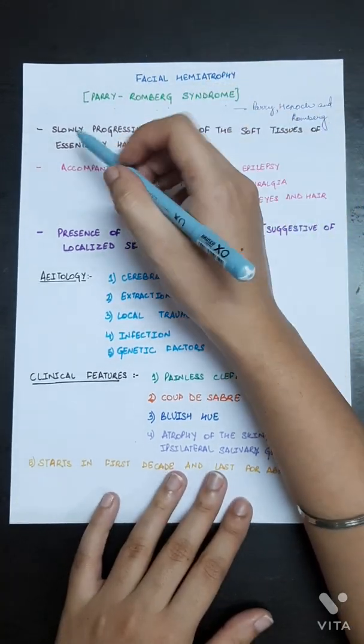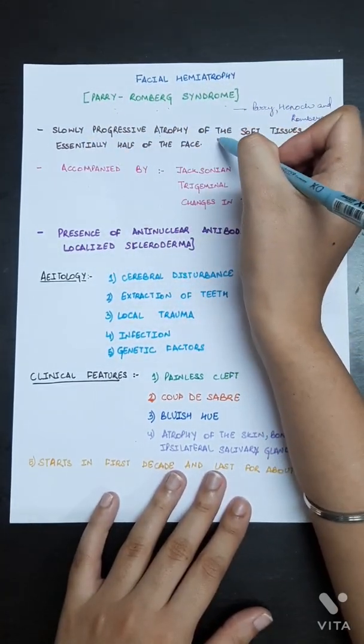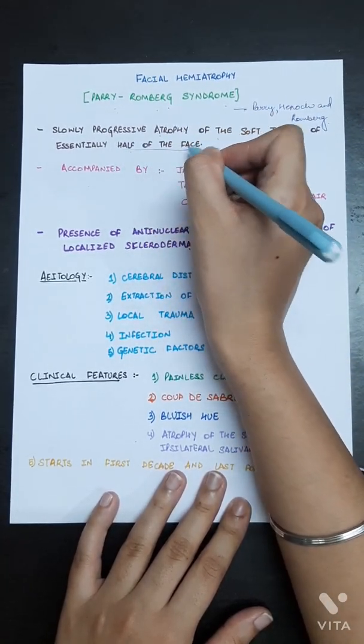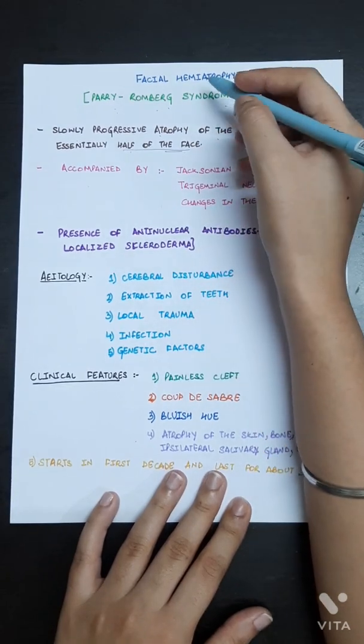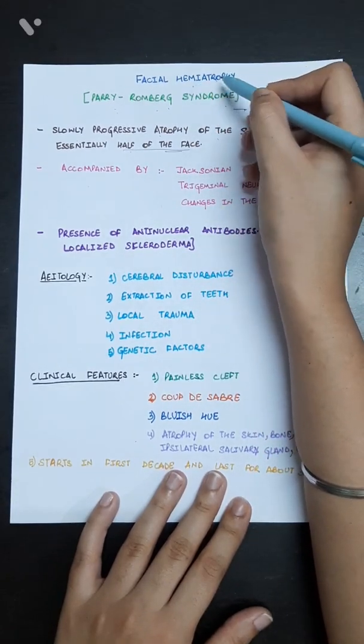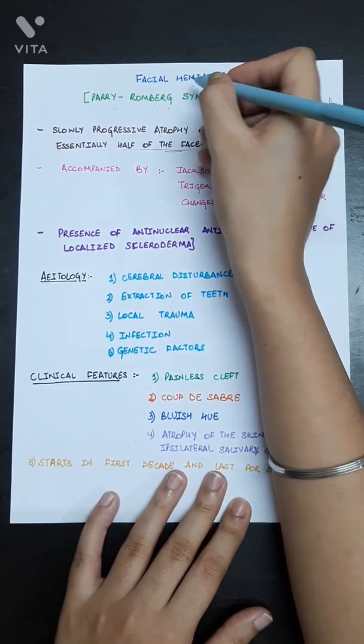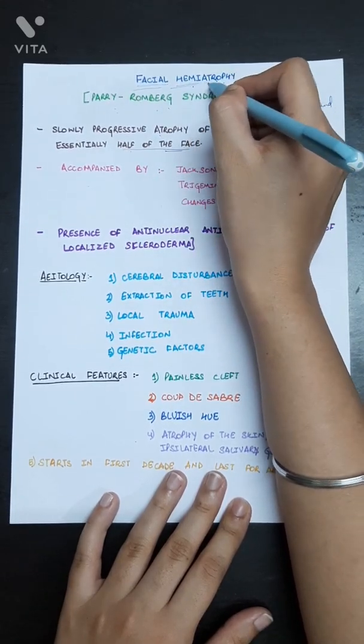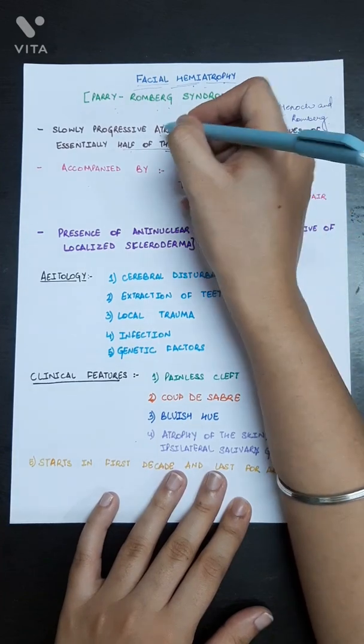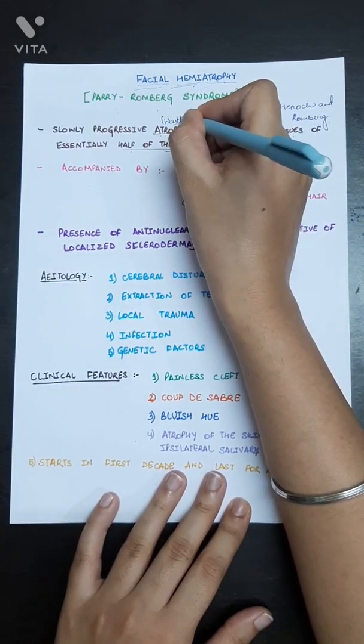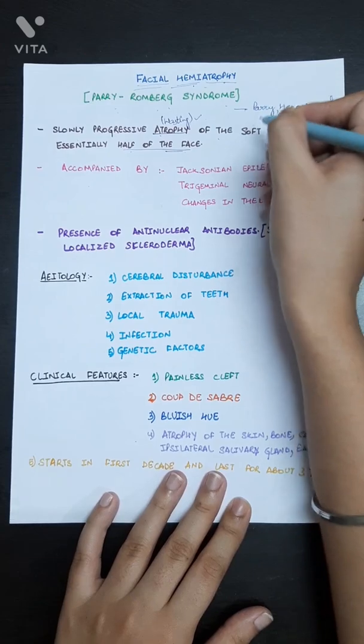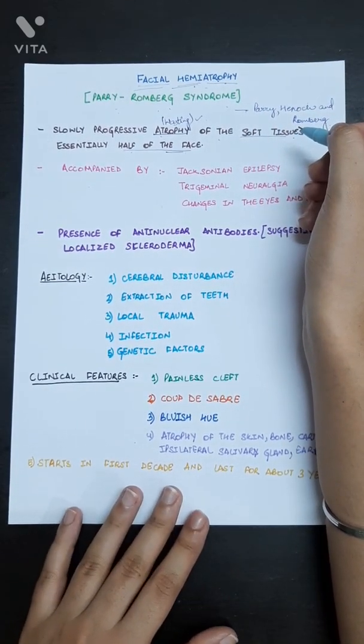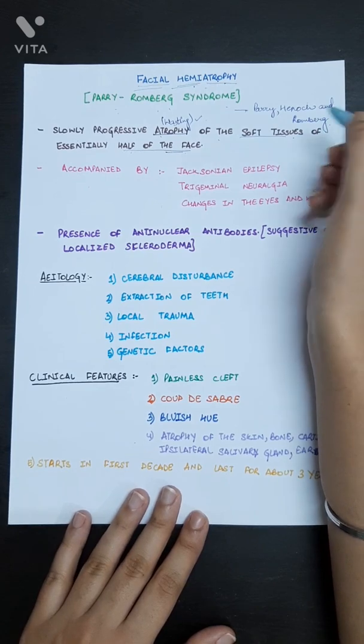It is basically a slowly progressive atrophy of the soft tissues of the face, basically half of the face. That is why the name Facial Hemiatrophy. Hemi means half and atrophy means wasting or lessening of the soft tissues and maybe of underlying structures such as bones and cartilage.